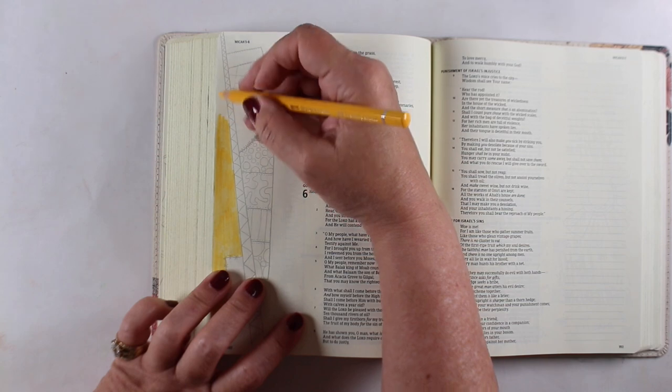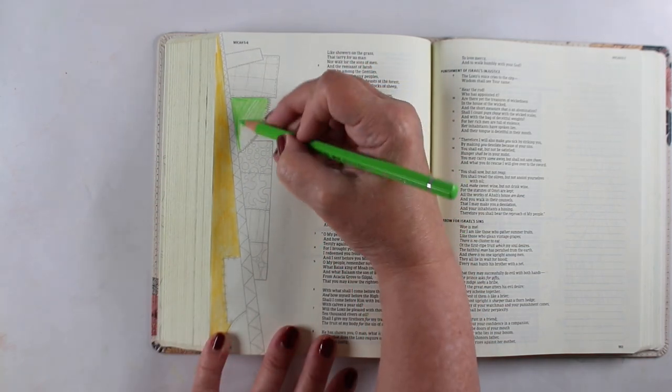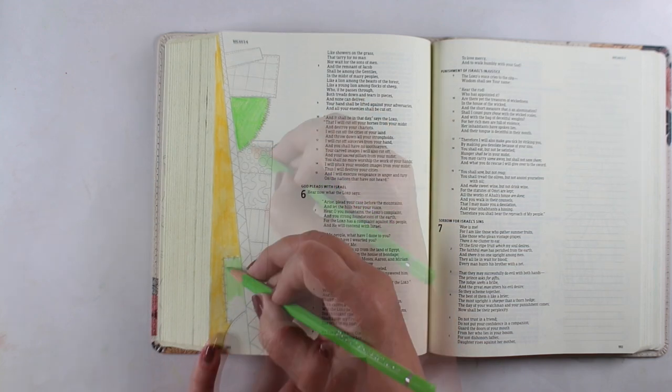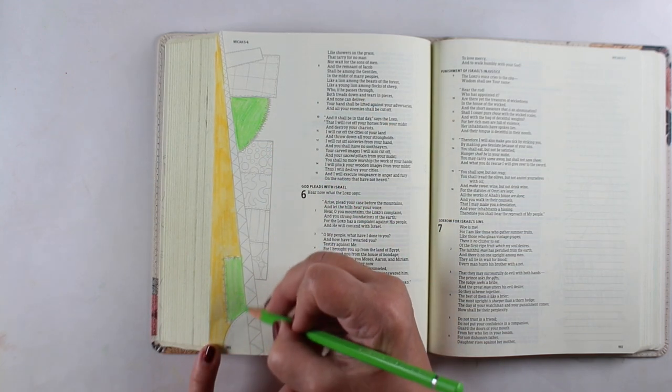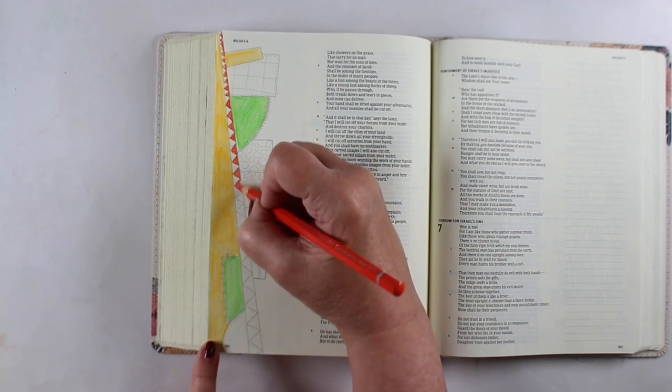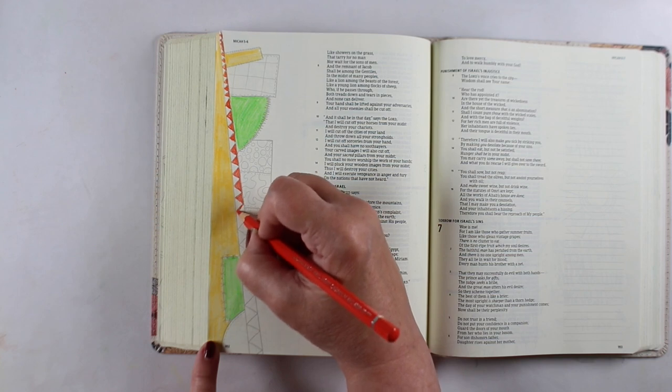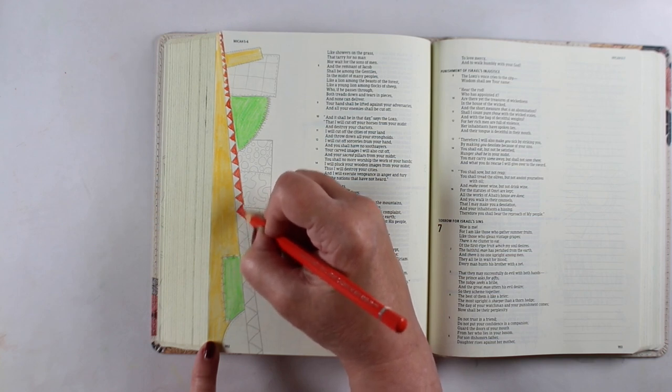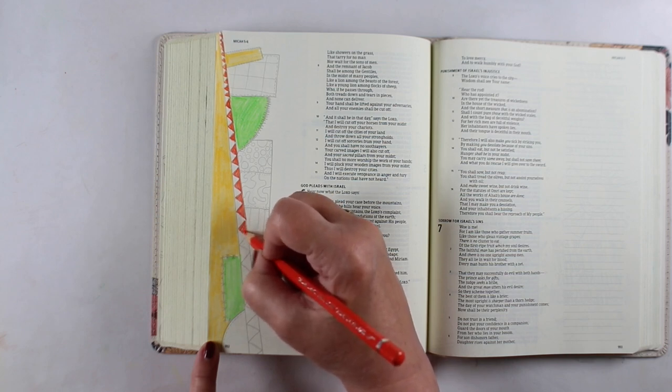I thought this would be really easy to replicate if you're looking for something to do on maybe a verse that you can't find any image for. This is a great way to spend some time with the Lord on that verse, meditating on it, asking him for his feedback on what he wants you to do with it, what in your life does he want to change through the study of this verse, and just add some beautiful color to it.